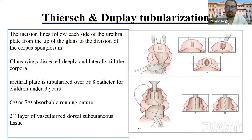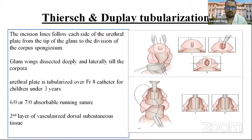Thiersch-Duplay tubularization: the incision line follows each side of the urethral plate from the tip of the glans to the division of the corpus spongiosum. The glans fins are dissected deeply and laterally to the corpora, and the urethral plate is tubularized over an 8 French catheter for children under 8 years. 6-0 or 7-0 absorbable sutures are used, and a second layer is provided using the vascular dorsal subcutaneous tissue.